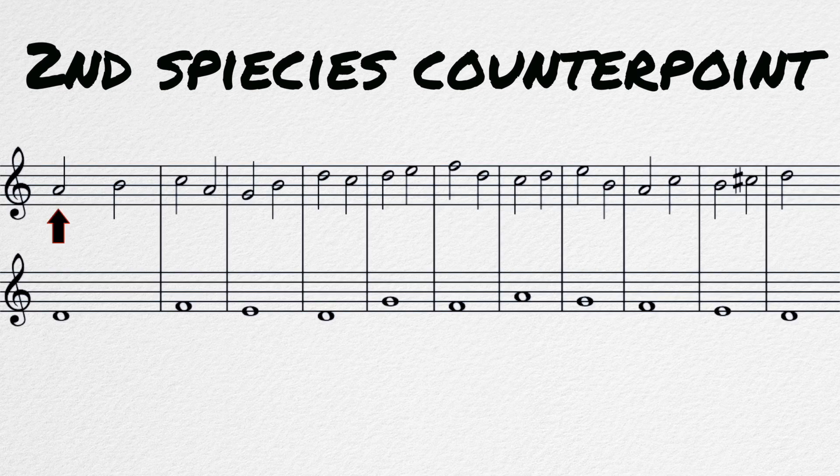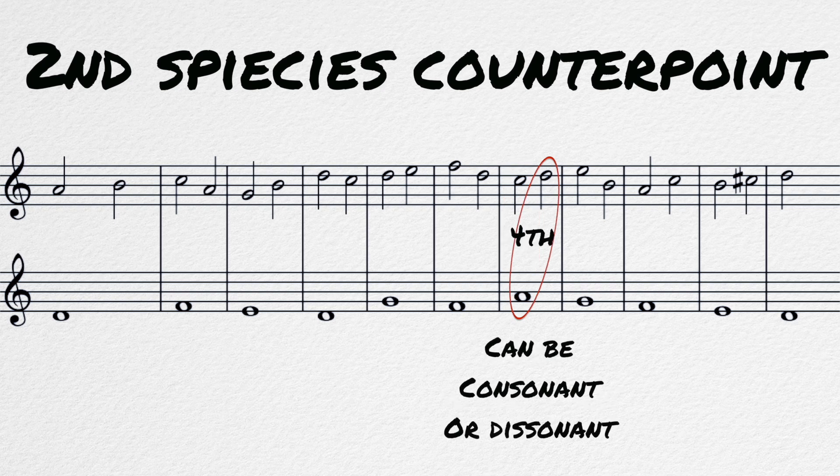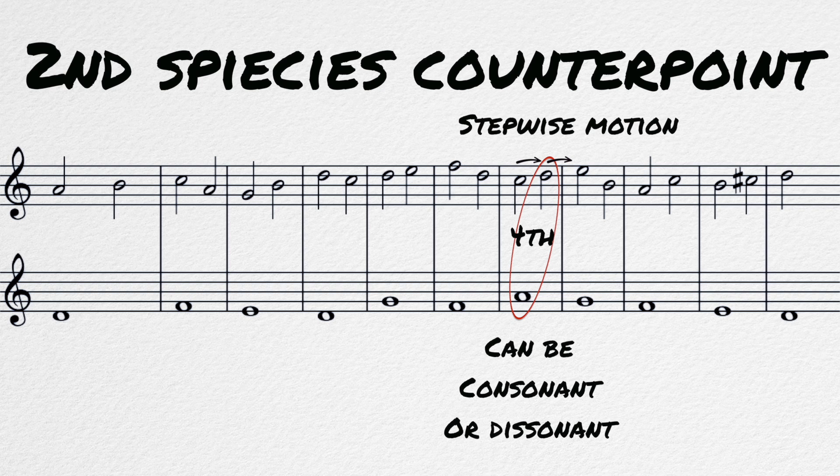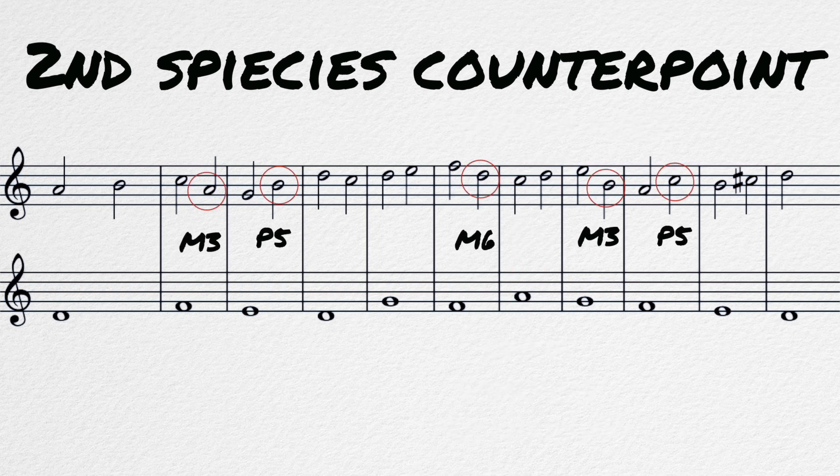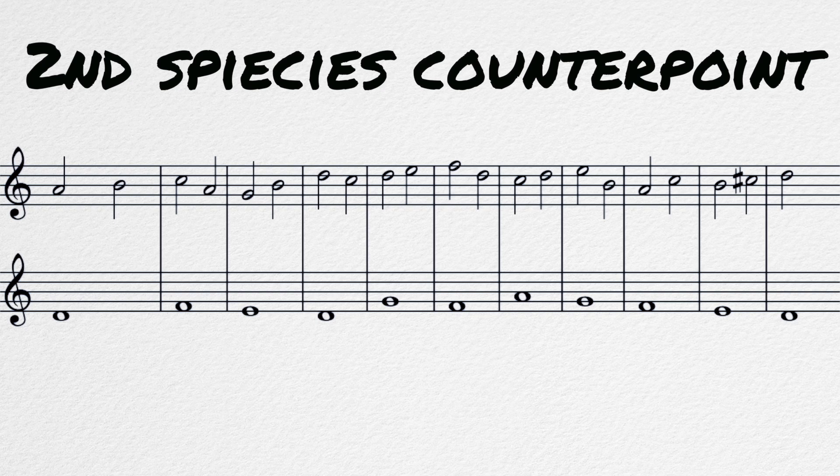Second species counterpoint. Second species is two notes against one, two half notes against a whole note. The first beat of every measure will be a consonance and the second can be either a consonance or a dissonance. If a dissonance is used, it must be approached and followed with stepwise motion. Leaps on the second note must be to a consonant note. We want to end this one the same way, leading tone in the upper voice and second degree in the bass.